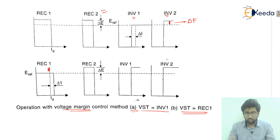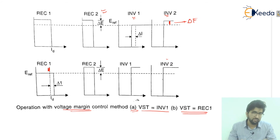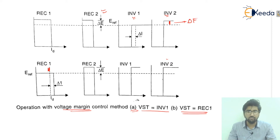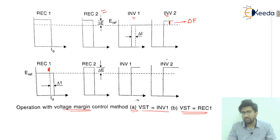This covers the related points for the voltage margin method. The basic graph shows that when shifting from REC1 to REC2 or INV2 to REC1, there will be some difference that is the delta E value. I hope you have understood all the points included here. Thank you so much.